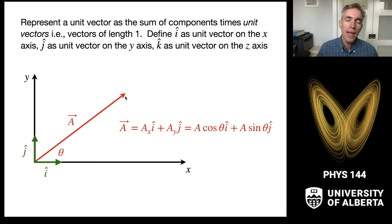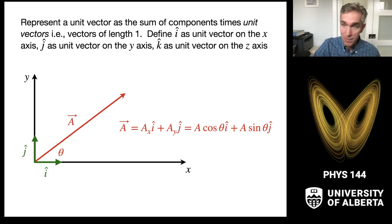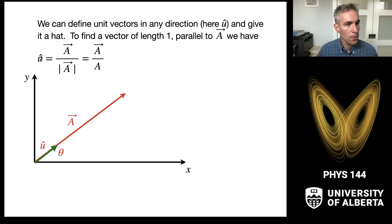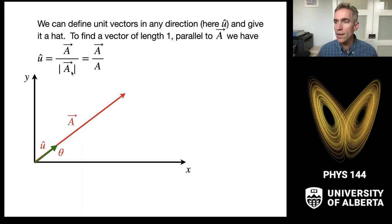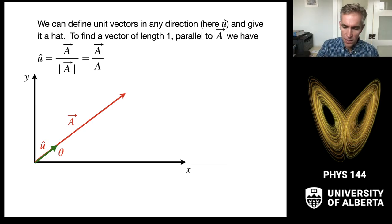As a trick, you can define a unit vector along any vector by taking that vector and dividing it by its magnitude. So a unit vector û pointed in the same direction as a is just a divided by |a|. That gives you a vector along a given direction with magnitude one. Unit vectors are just giving us direction — we set their magnitude to one to simplify all our results.